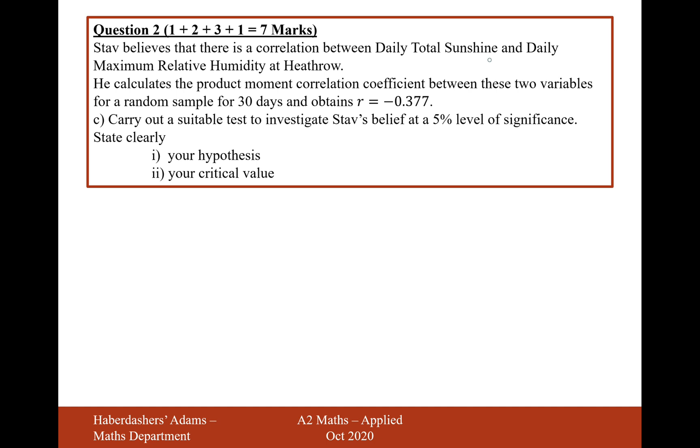Now, Stav doesn't actually have any indication of whether he believes there's negative correlation or positive correlation. So when we come to do our hypothesis, in fact, let's jump to it now. When we come to do the hypothesis for this hypothesis test, the alternate hypothesis is that there is just going to be no correlation. This is effectively now going to turn it into a two-tailed test. Even though we can see that the correlation is minus 0.377, which is indicating negative correlation, there's no suggestion in this first sentence that whether Stav believes there's positive or negative correlation, so therefore we just have to go with a two-tailed test.